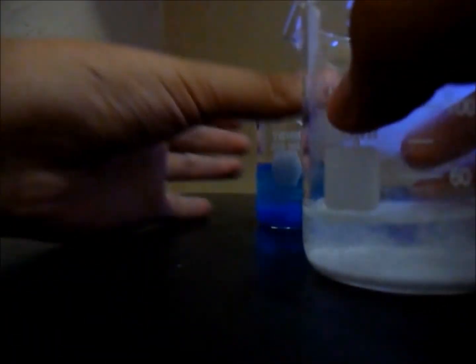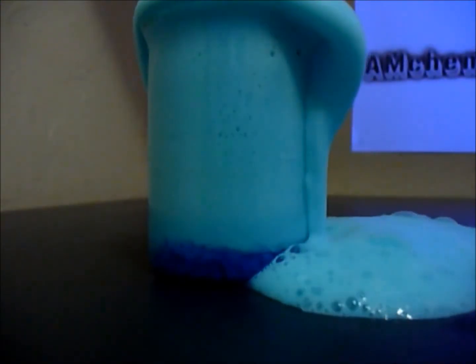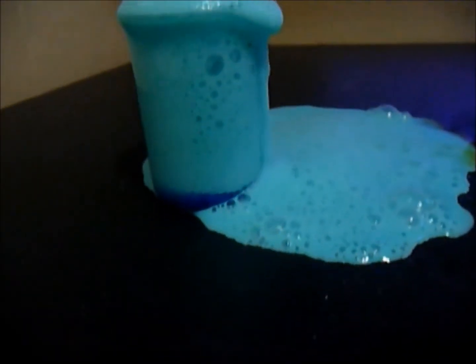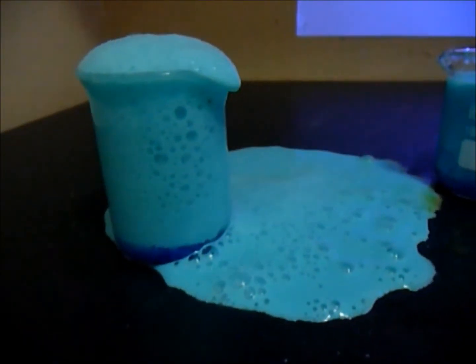So this is sodium bicarbonate, which is NaHCO3, and look what happens. You see, it spills over because it's evolving a lot of hydrogen—I mean CO2, which is carbon dioxide.